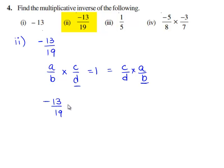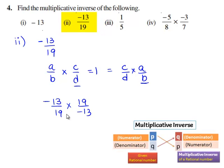If we multiply this rational number with 19 by minus 13, we have common factors 19 and 13 which get cancelled, and we are left with 1. Therefore,